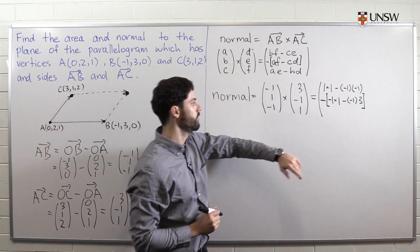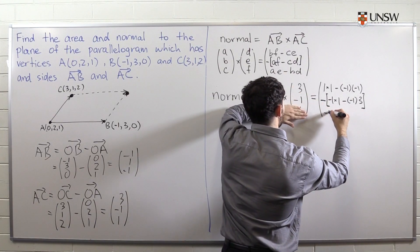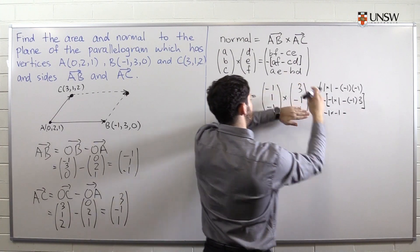And finally, for the last component, we ignore the last row here. We do minus one times minus one minus one times three.